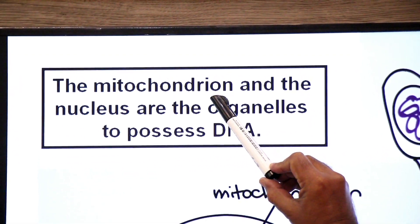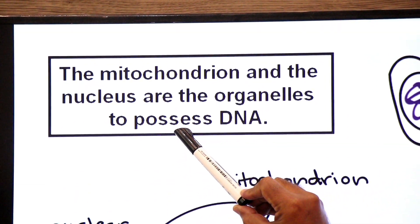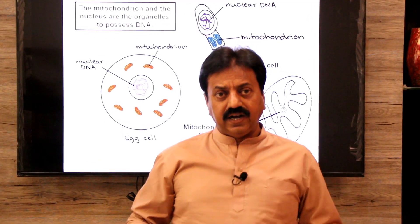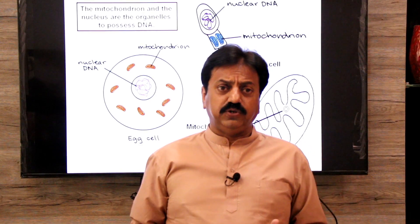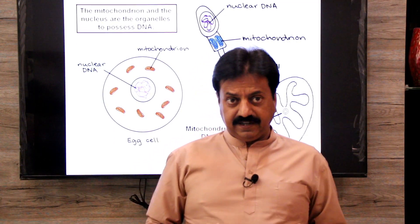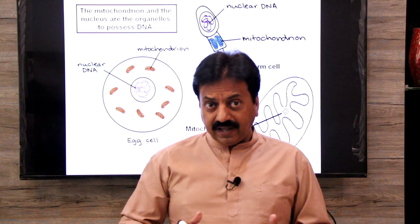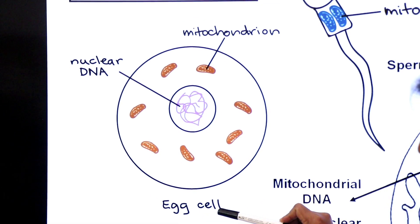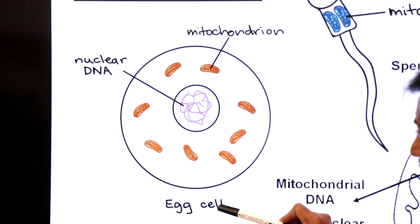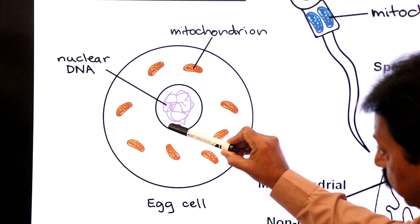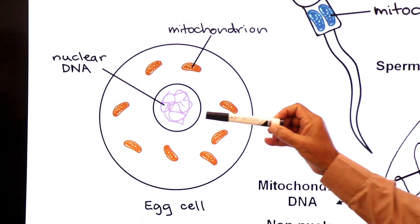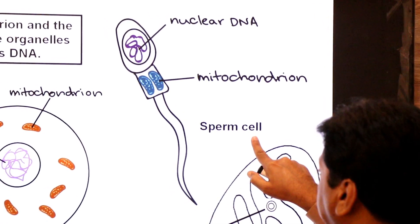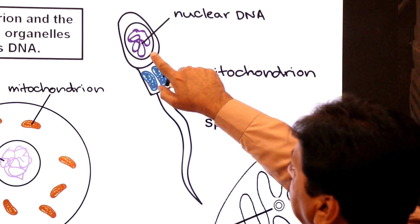The mitochondria and the nucleus are the organelles that possess DNA. The nucleus is a separate organelle and mitochondria is a separate organelle — both have their own separate DNA. The DNA in the nucleus is called nuclear DNA, and the DNA in the mitochondria is called mitochondrial DNA, also known as non-nuclear DNA.